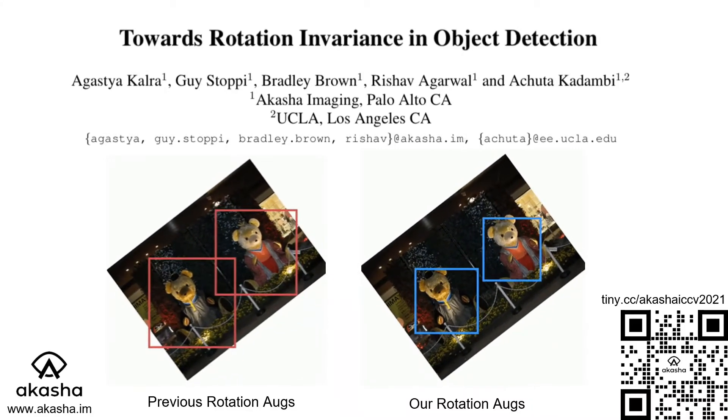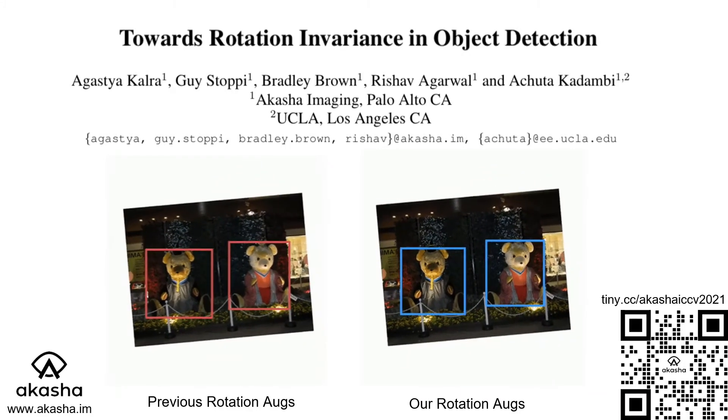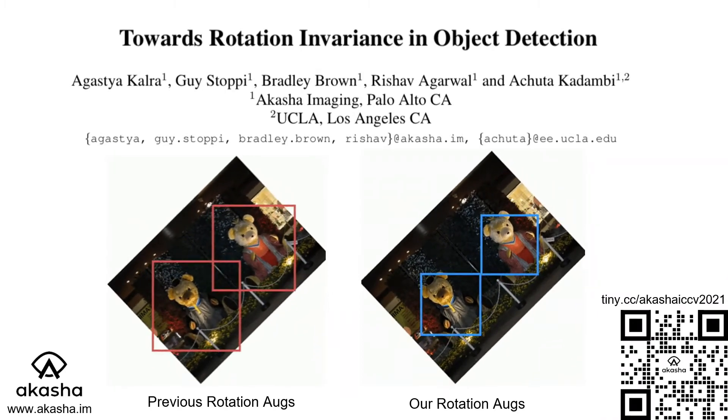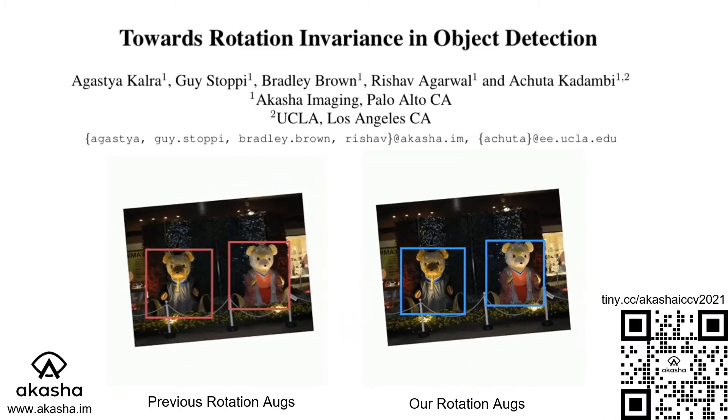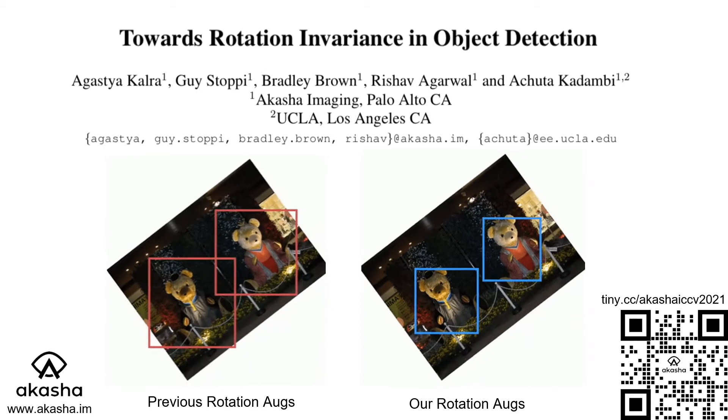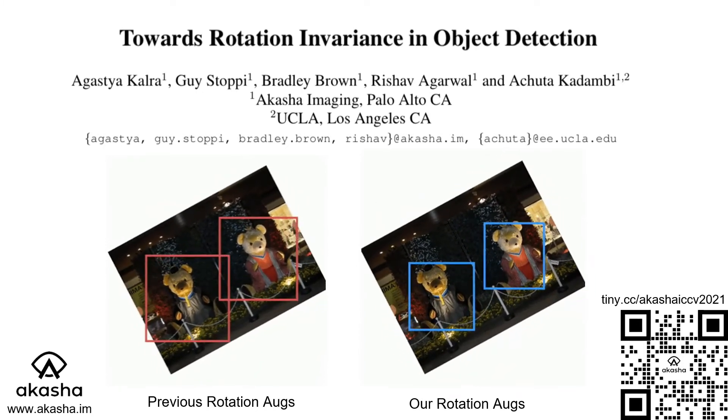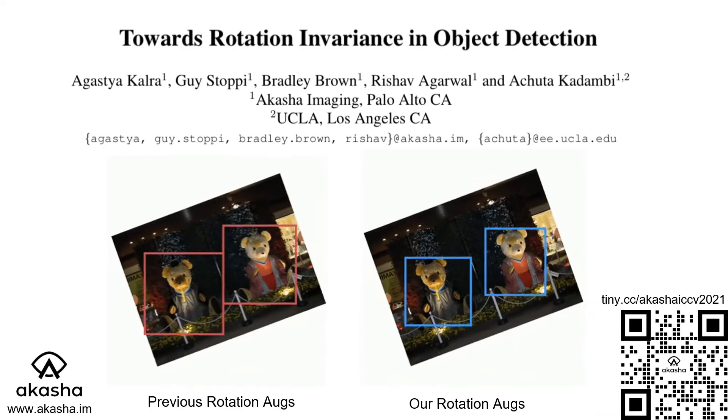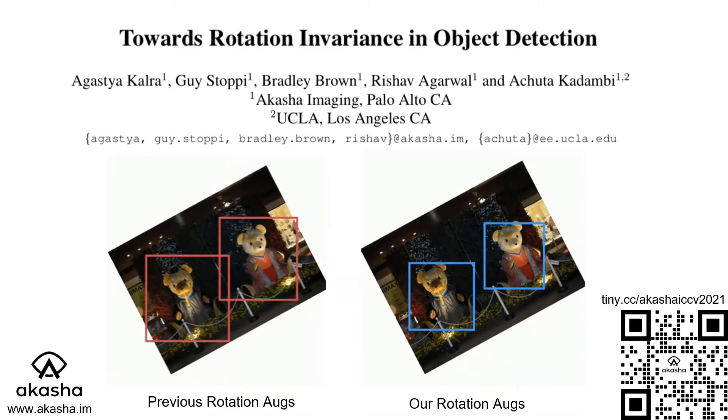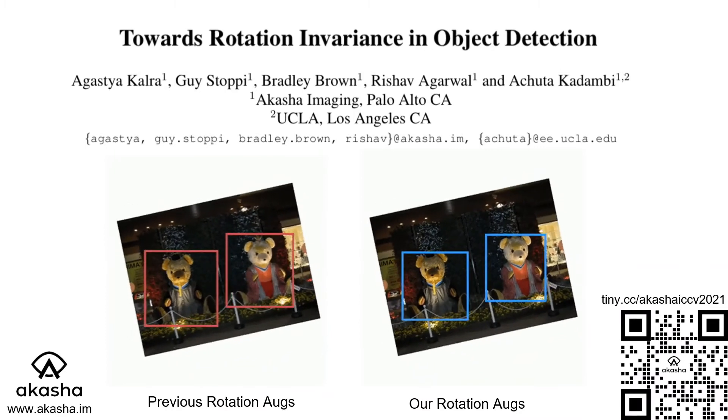This is the presentation for our ICCV 2021 paper Towards Rotation Invariance in Object Detection. The paper proposes a novel method for rotating bounding box labels that allows rotation augmentations to be used more effectively in object detection. This improves the rotational invariance of object detection models and is useful in a number of applications.